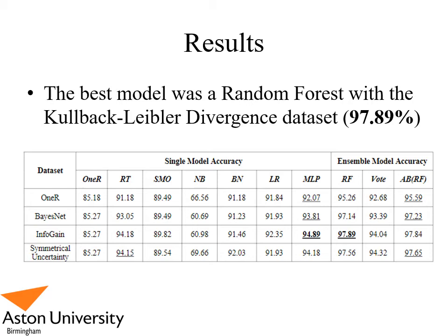The best single model was the deep neural network, achieving 94.89%, but this was outperformed by the random forest which had an overall best score of 97.89%.